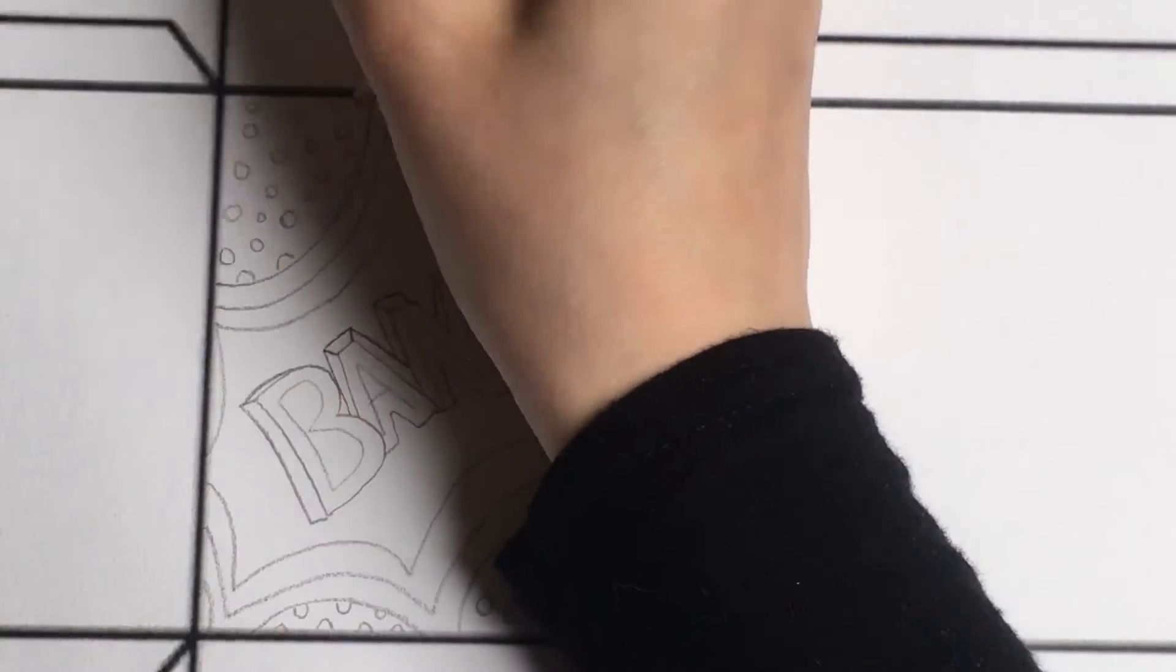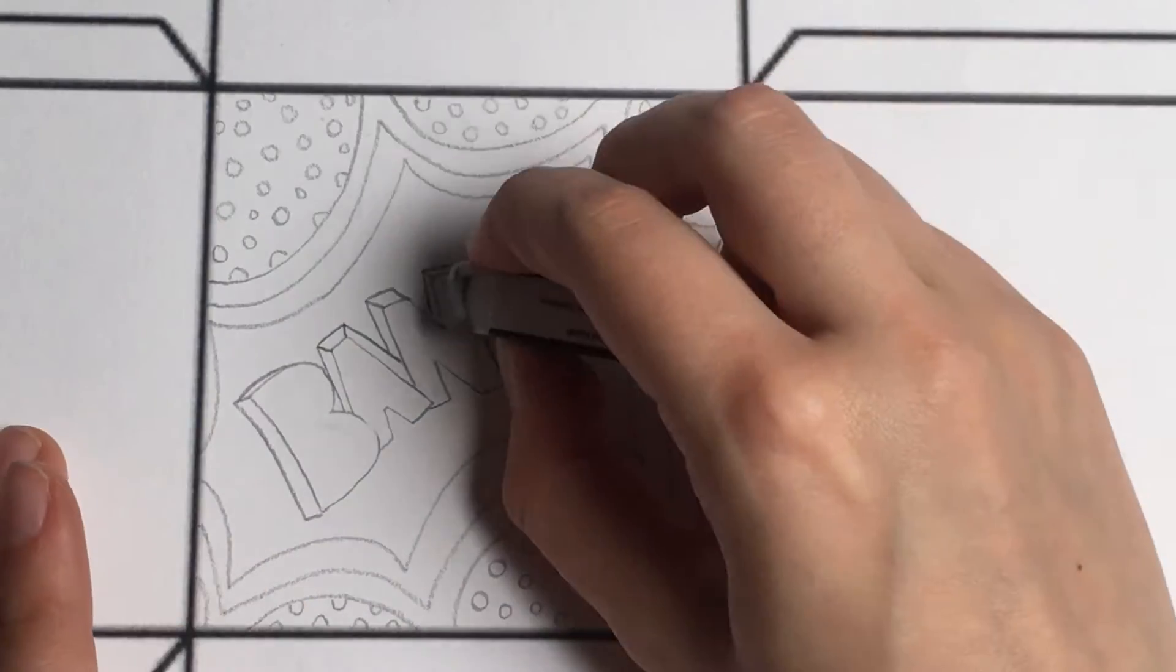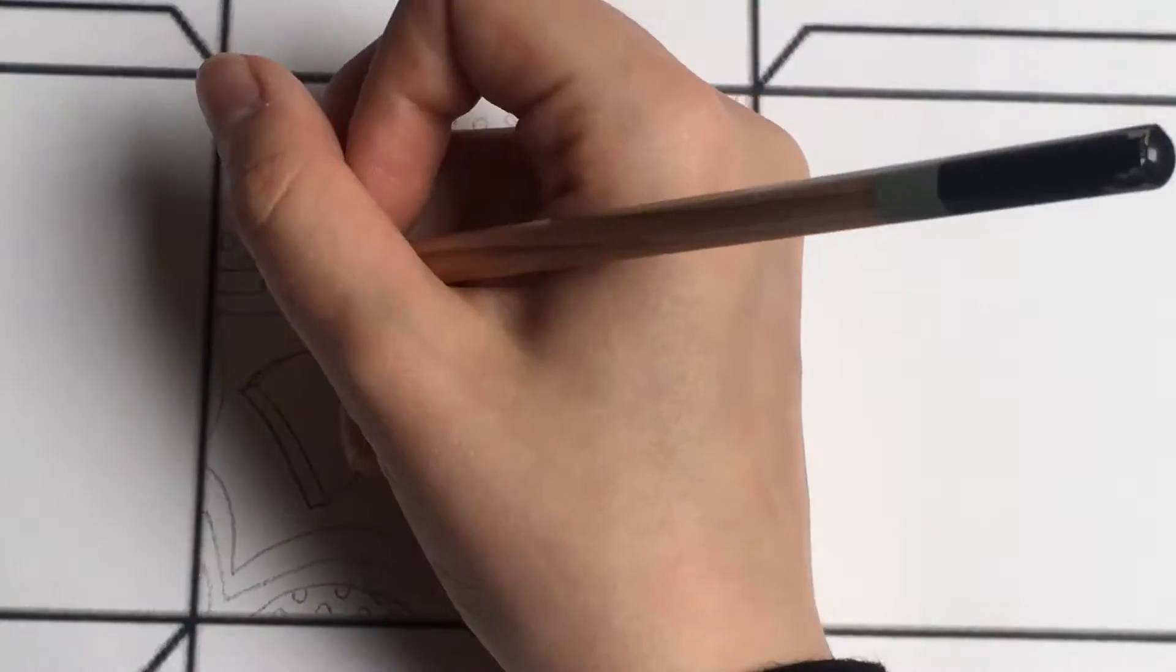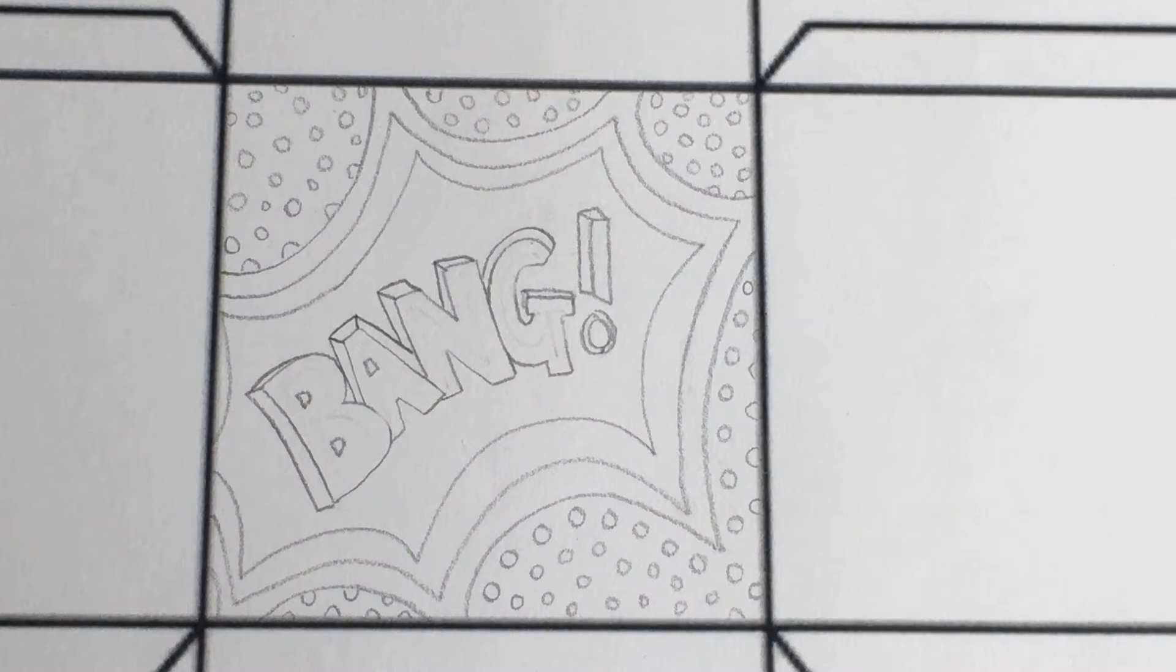Then what I'm going to do with a rubber is rub out my original BANG word so I'm left with the block font. Next is to add some color.